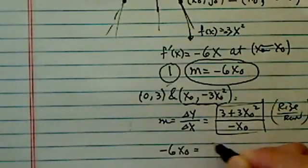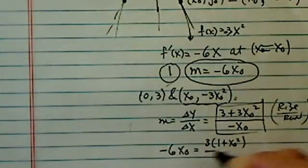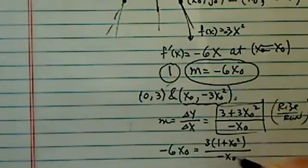Minus 6x0 is equal to 3. Let's pull the 3 out. 1 plus x0 squared divided by minus x0. Now, let's solve this equation.